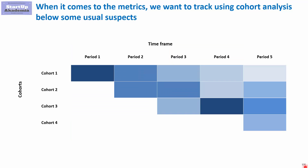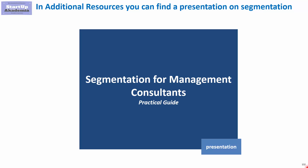Remember that in cohort analysis, you want to observe and analyze two things: the difference between each cohort, and the behavior of a specific cohort over time. The third thing is whether cohorts behave in the same manner — differences may be caused by the product, or by something related to the cohorts themselves. For more on segmentation, check the presentation in the additional resources, where we cover in detail different ways of segmenting the market — you should find it extremely useful.